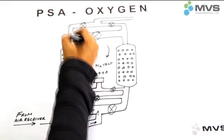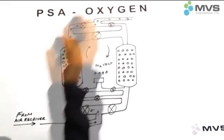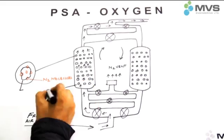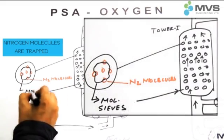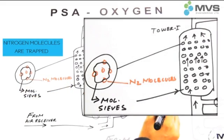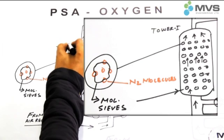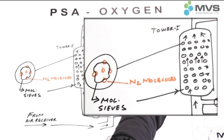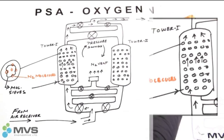Compressed air is passed through tower one. This compressed air pressurizes the tower. The nitrogen gets absorbed by the molecular sieves, while the oxygen gas is delivered as a product gas. Oxygen production continues until tower one gets saturated with nitrogen molecules.